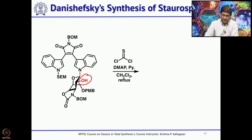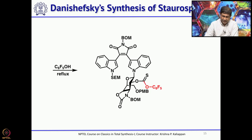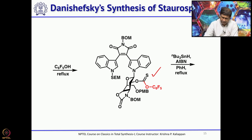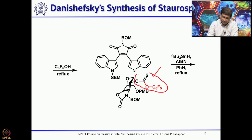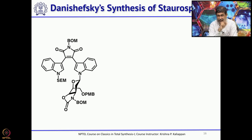It was treated with thiophosgene to get the half ester, and further addition of pentafluorophenol gives an intermediate. Treatment with tributyltin hydride causes elimination of the hydroxyl group to give CH2 at that carbon, effectively removing the hydroxyl group. The next step is to connect the second indole ring with the sugar unit.